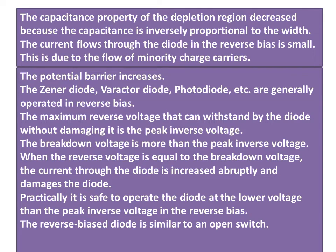The maximum reverse voltage that can be withstood by the diode without damaging it is the peak inverse voltage. The breakdown voltage is more than the peak inverse voltage. When the reverse voltage equals the breakdown voltage, the current through the diode increases significantly and damages the diode. Practically, it is safe to operate the diode at a lower voltage than the peak inverse voltage in reverse bias.